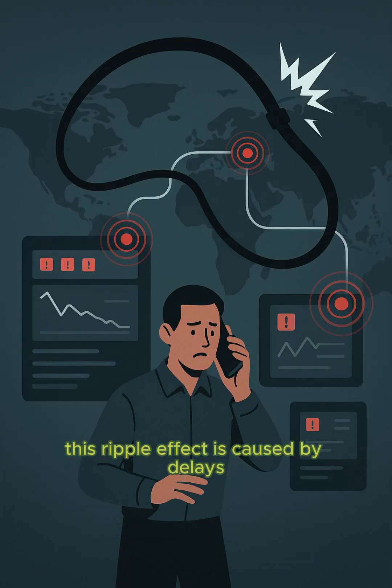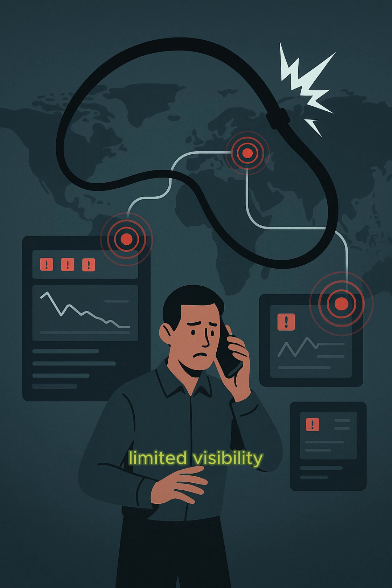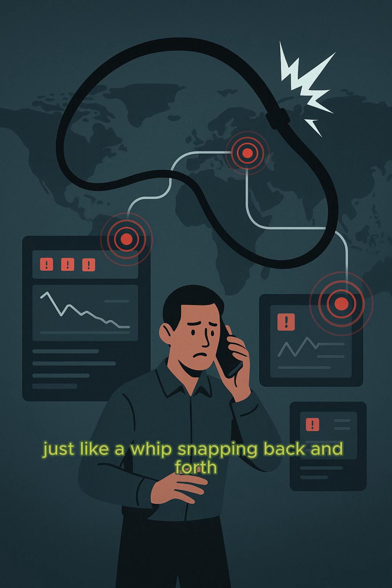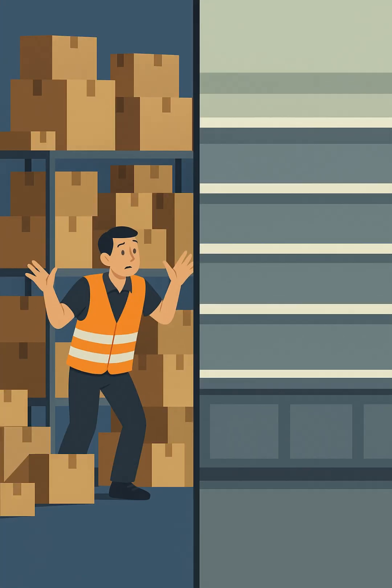This ripple effect is caused by delays, limited visibility, and overreactions to short-term data — just like a whip snapping back and forth.